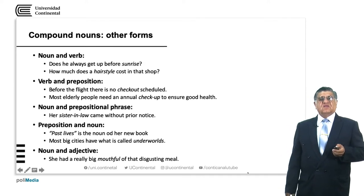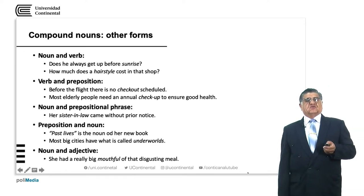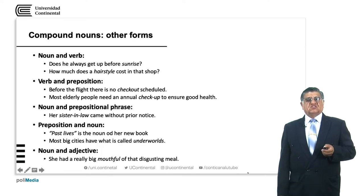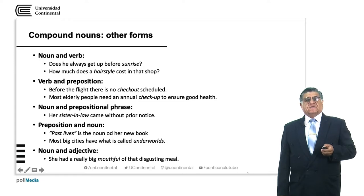We have other forms of compound nouns. For example, a noun and a verb: 'Does he always get up before sunrise?' We have already seen sunrise. 'How much does a hairstyle cost in that shop?' In this case, we have the noun compounds used in interrogative sentences.